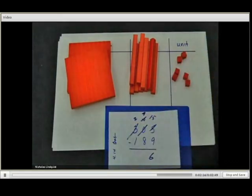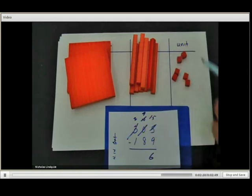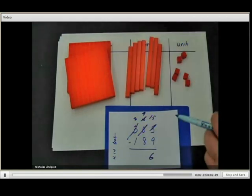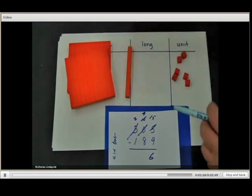I have nine longs and I'm going to take eight longs away. So two, four, six, eight, which leaves one long.